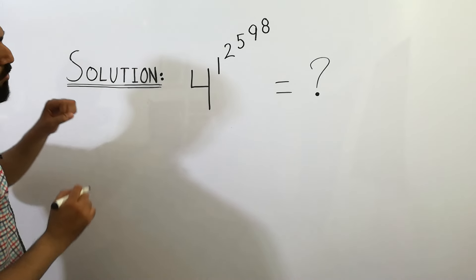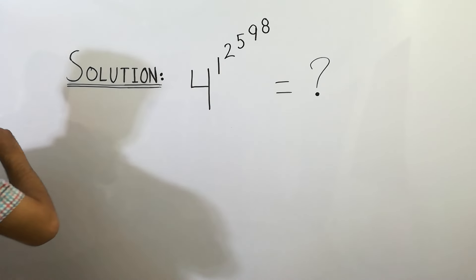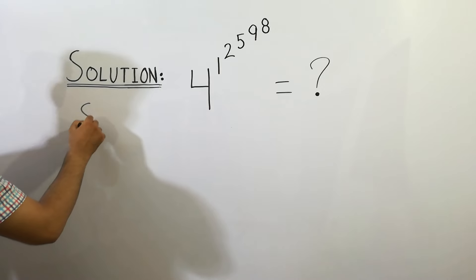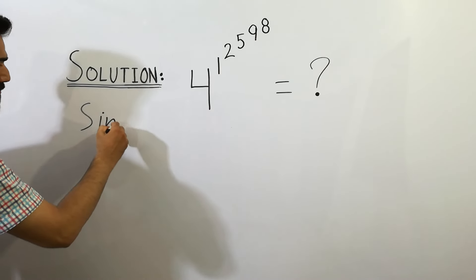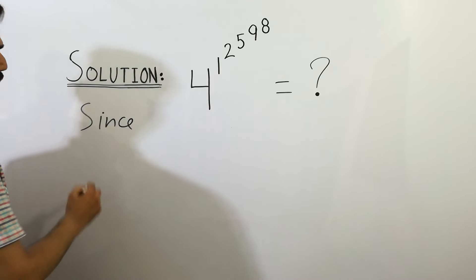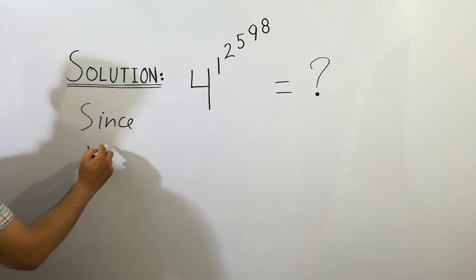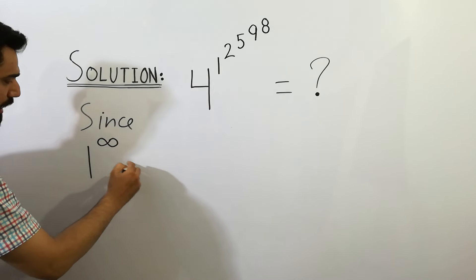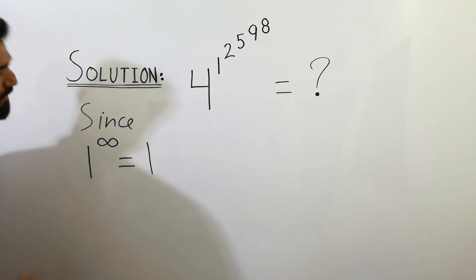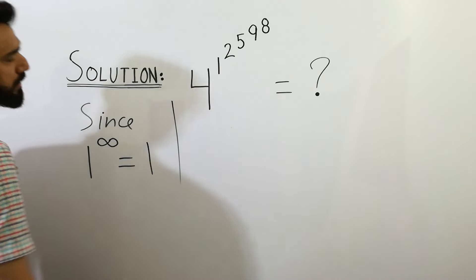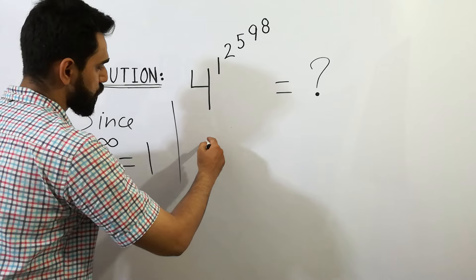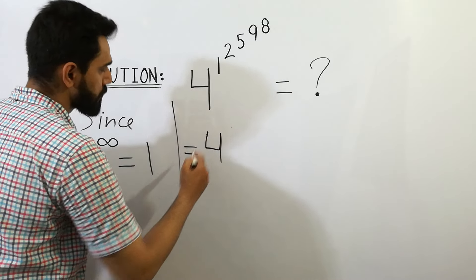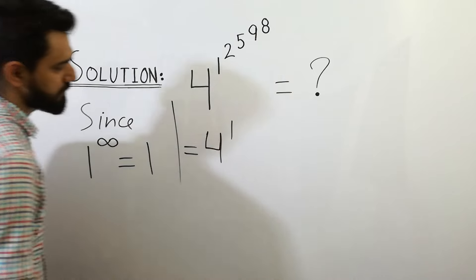If you can't solve this, let's take a resolution here. Remember, since 1 to the power infinity always equals 1, so it can be written as 4 to the power 1. Clear?